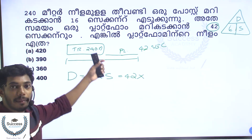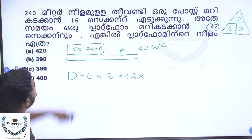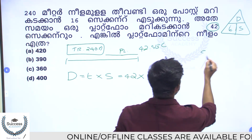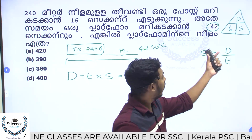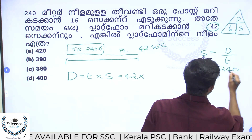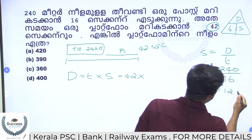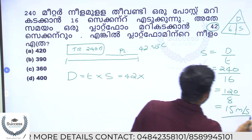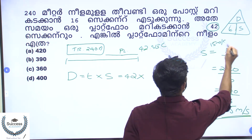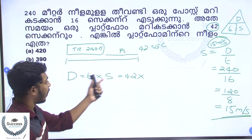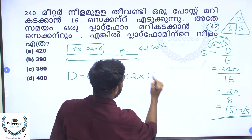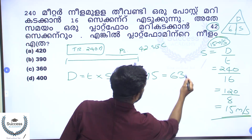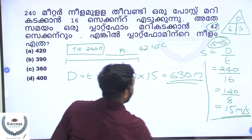Speed is distance divided by time. If you have a post, the train length divided by time gives speed. The time to pass a post is 8 seconds, so speed is 120 divided by 8, which equals 15 meters per second. That is the train speed — 15 meters per second.